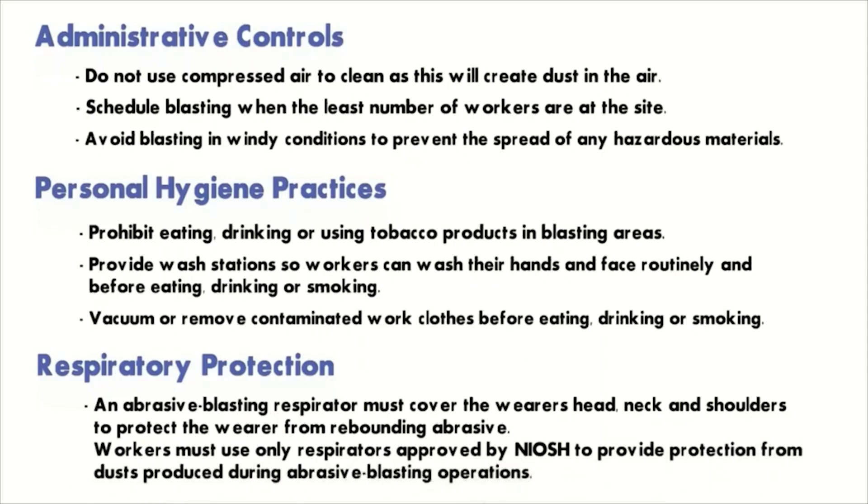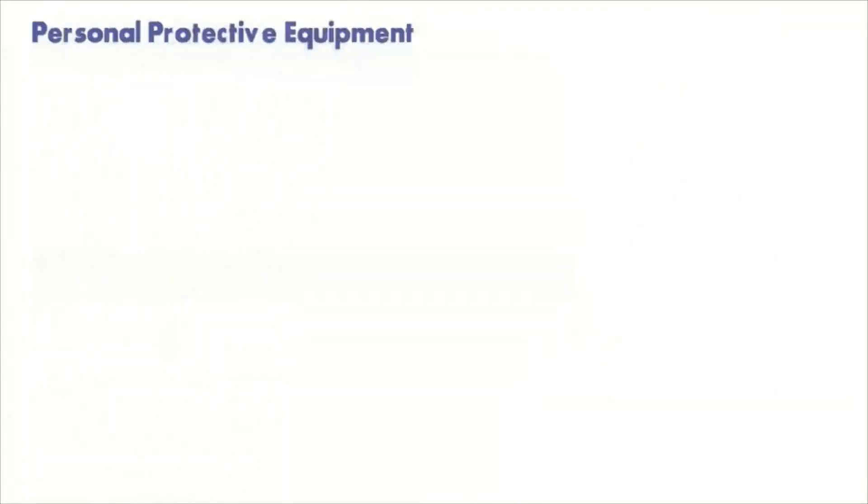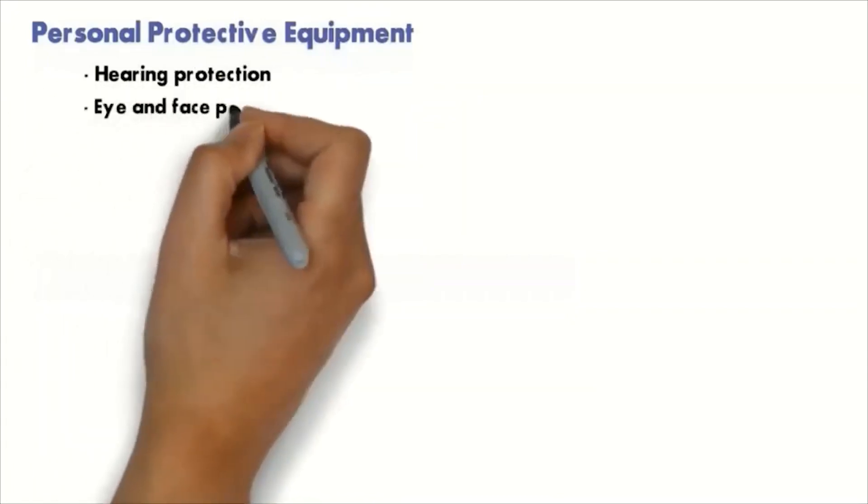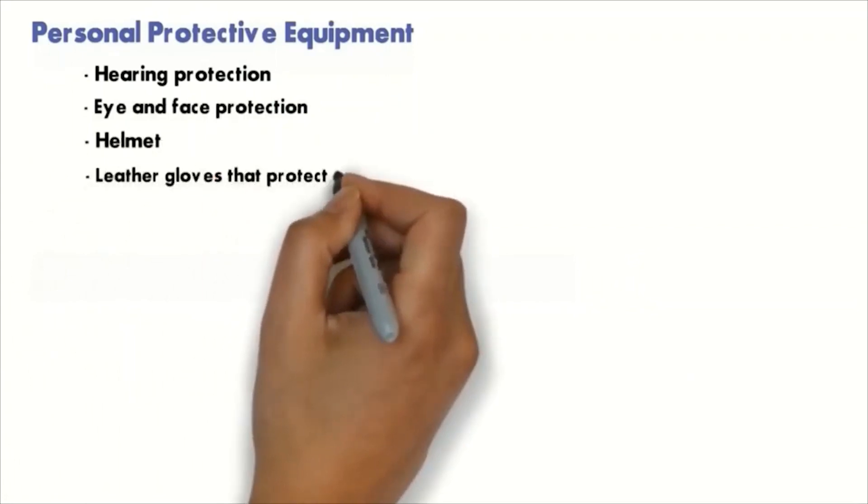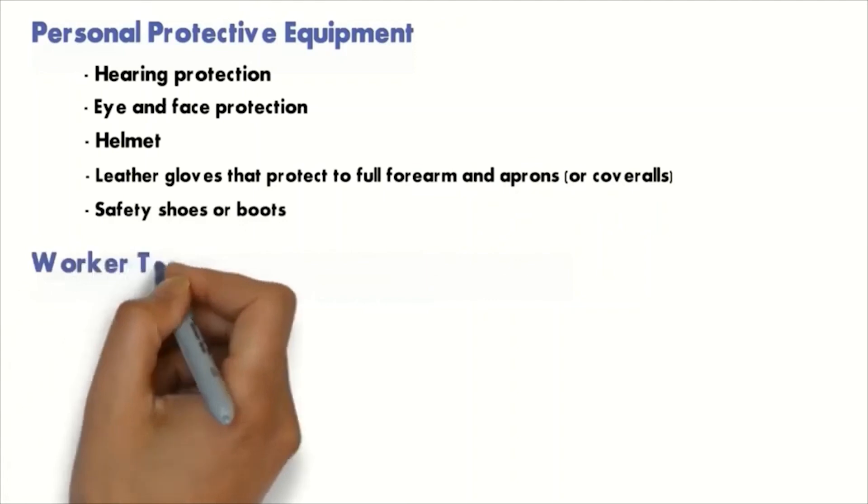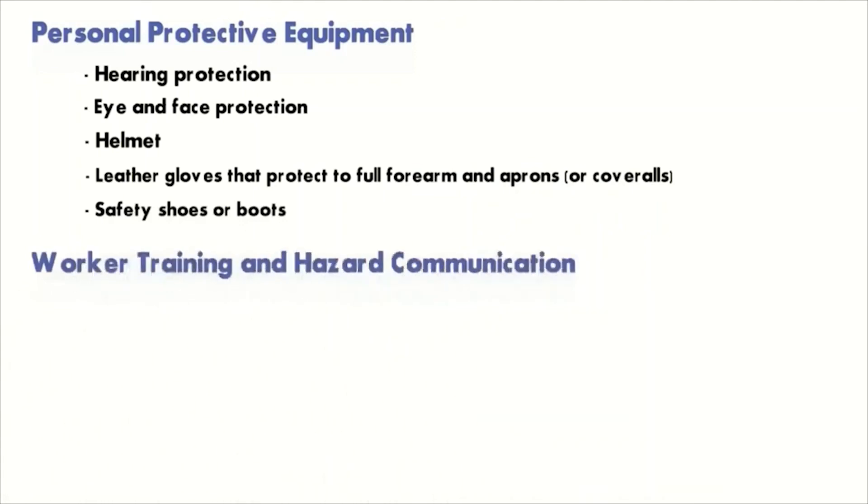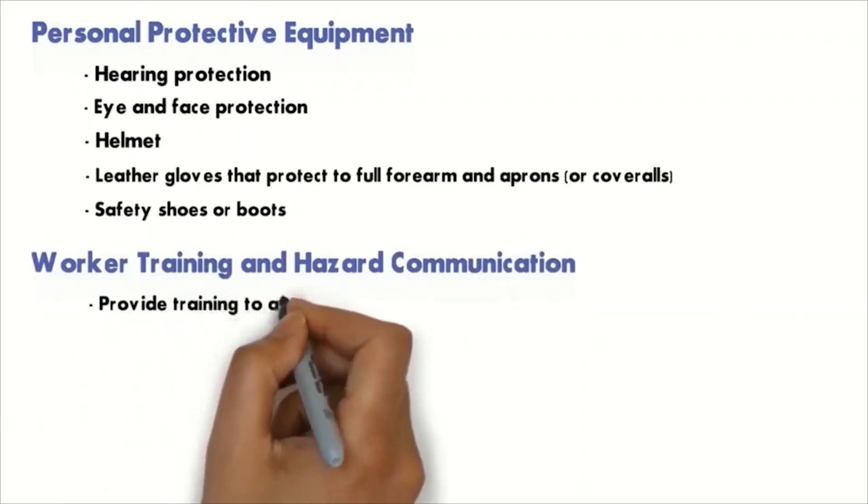Number five is personal protective equipment: hearing protection, eye and face protection, helmet, gloves that protect the forearm and upper arm, safety shoes or boots. Worker training and hazard communication is another way to control sandblasting operations.